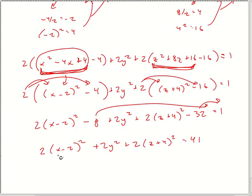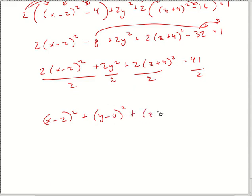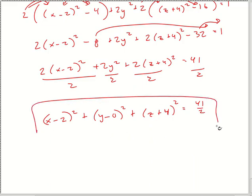Notice they all have a 2 in front, so divide by 2 everywhere. The 2's cancel, leaving just a Y. The final answer is (x minus 2) squared plus y squared plus (z plus 4) squared equals 41 over 2. That one's a little bigger, but glad we went through it together.